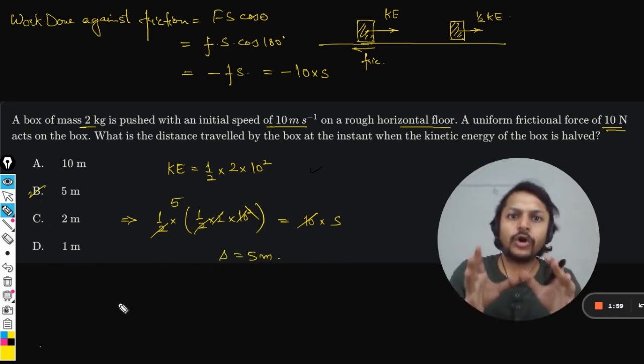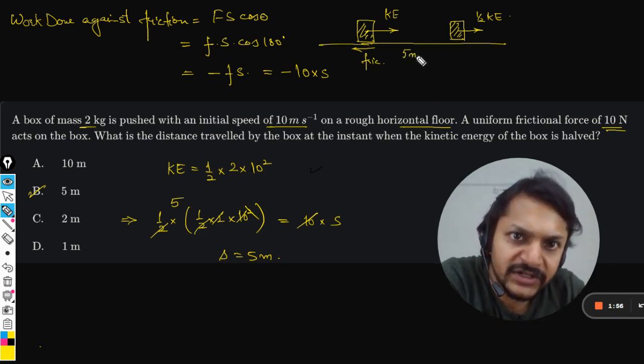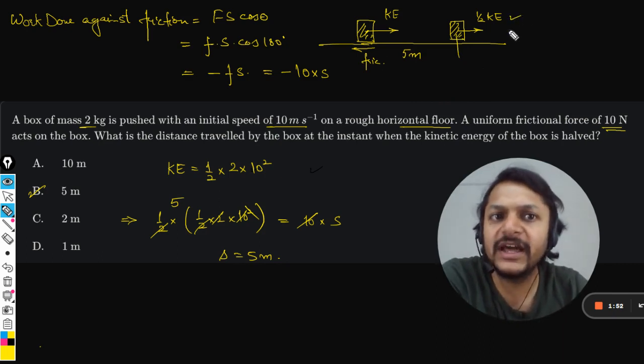Hence, if the body is moving for 5 meters in the forward direction, it is going to lose half of the kinetic energy.